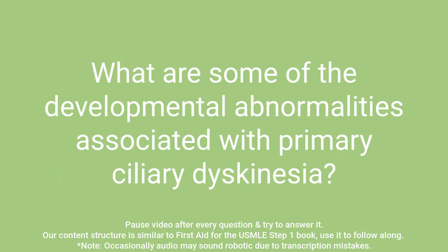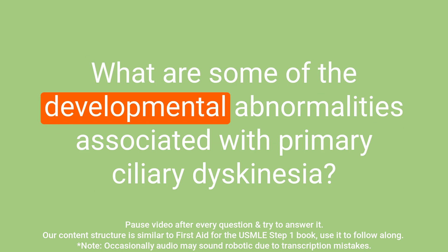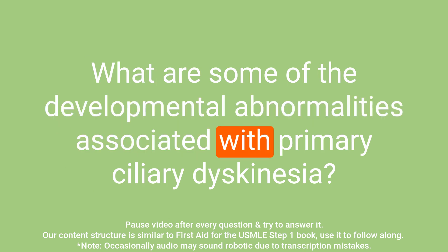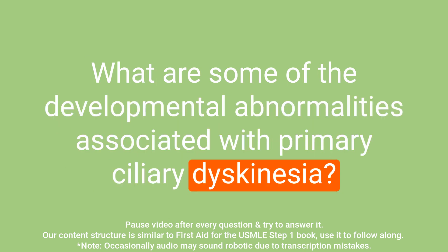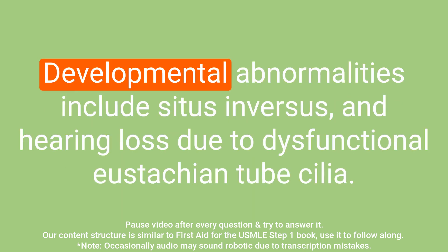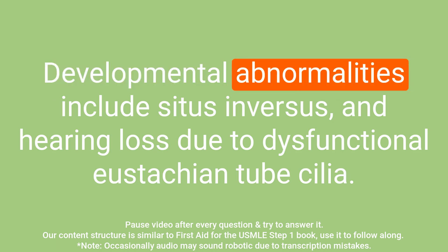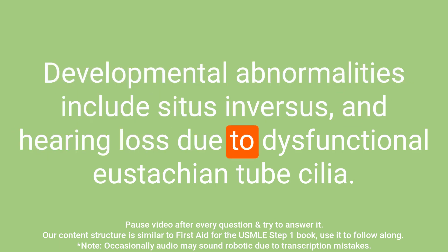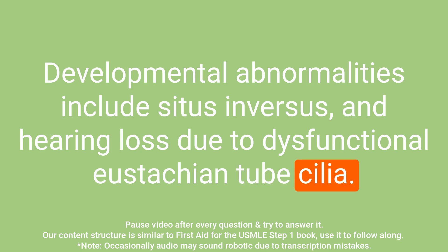Question: What are some of the developmental abnormalities associated with primary ciliary dyskinesia? Answer: Developmental abnormalities include situs inversus and hearing loss due to dysfunctional eustachian tube cilia.